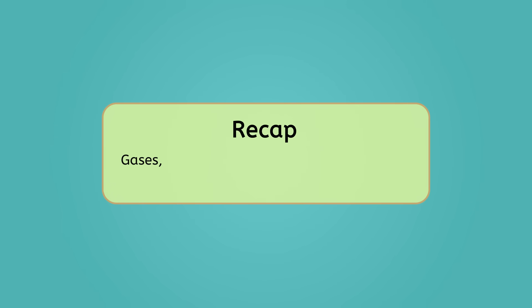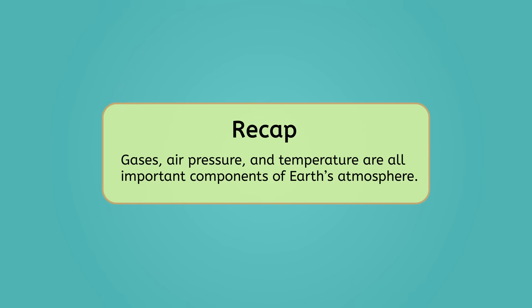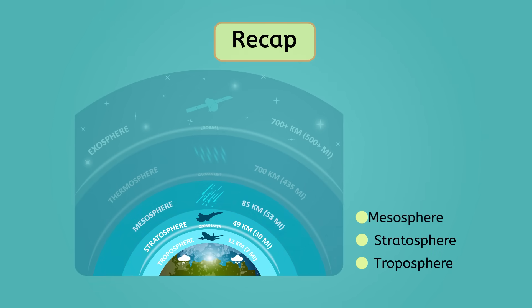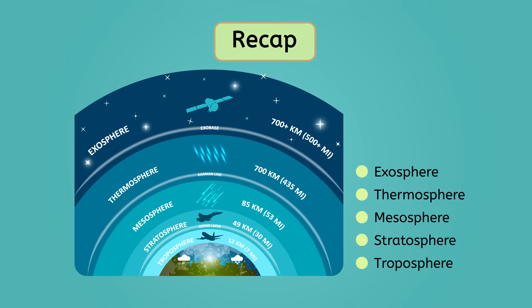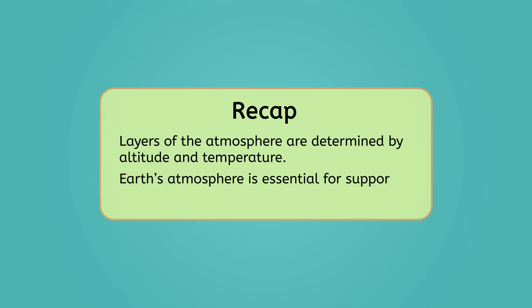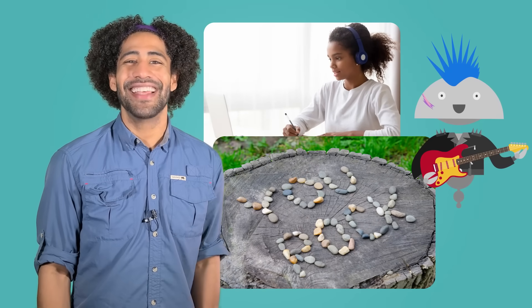So, let's go over what we learned today. We now know gases, air pressure, and temperature are all important components of Earth's atmosphere. The five layers of the atmosphere are the troposphere, stratosphere, mesosphere, thermosphere, and exosphere. The layers of the atmosphere are determined by altitude and temperature. Lastly, Earth's atmosphere is essential for supporting life on our planet. Be sure to check out the practice questions and extension activities that go with this lesson. And remember, in Earth science, as in life, you rock! I'll see you next time!